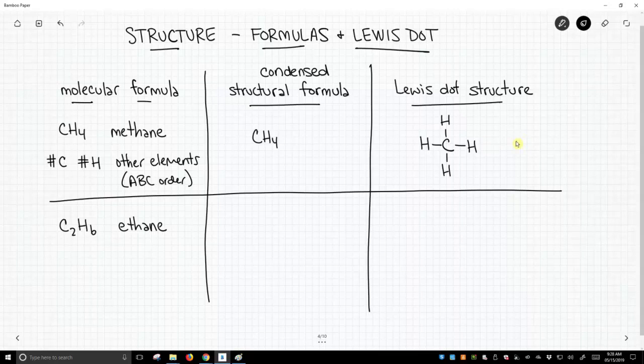Lewis dot structures don't have to be written exactly like this. Technically, this could be the Lewis structure for methane, although I think most people like to spread the hydrogens out evenly. But that right-hand structure does communicate the structure, so that's a valid Lewis structure.